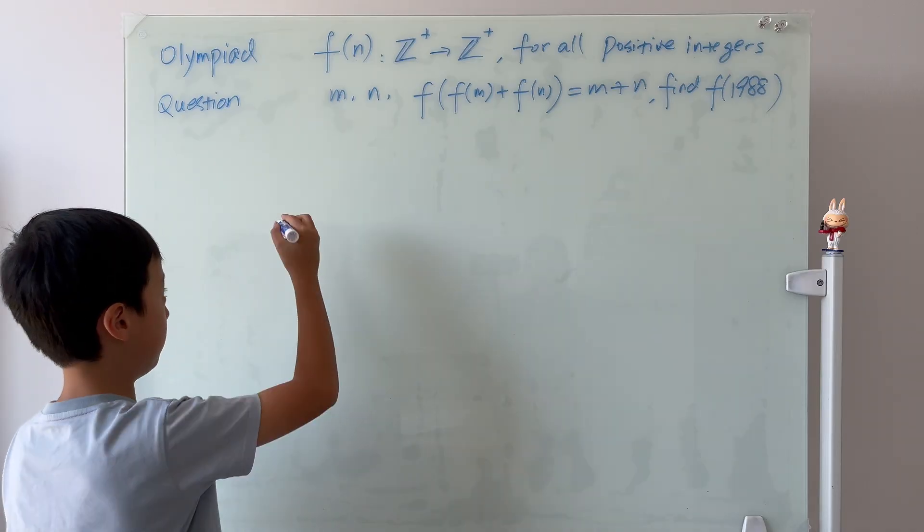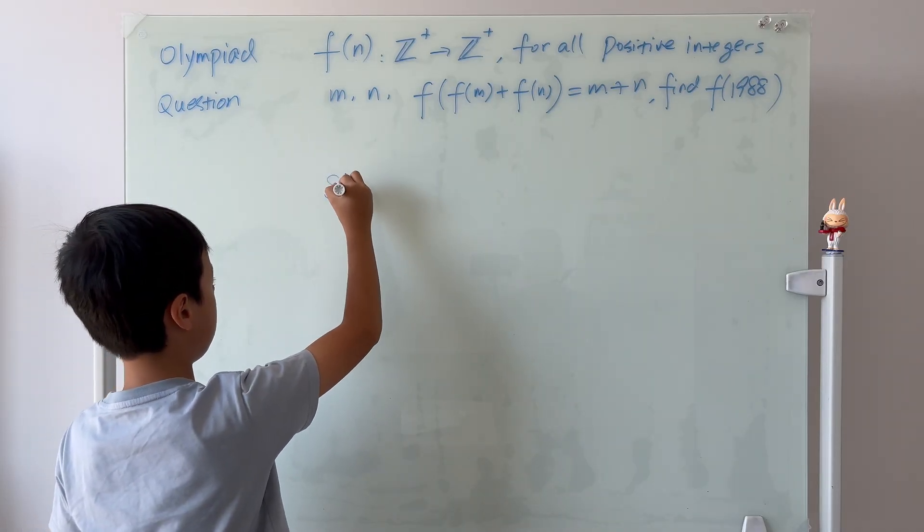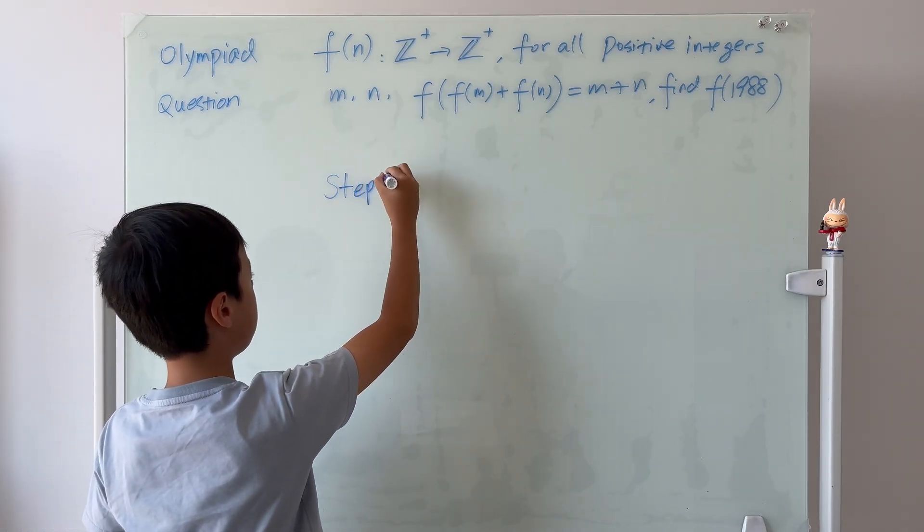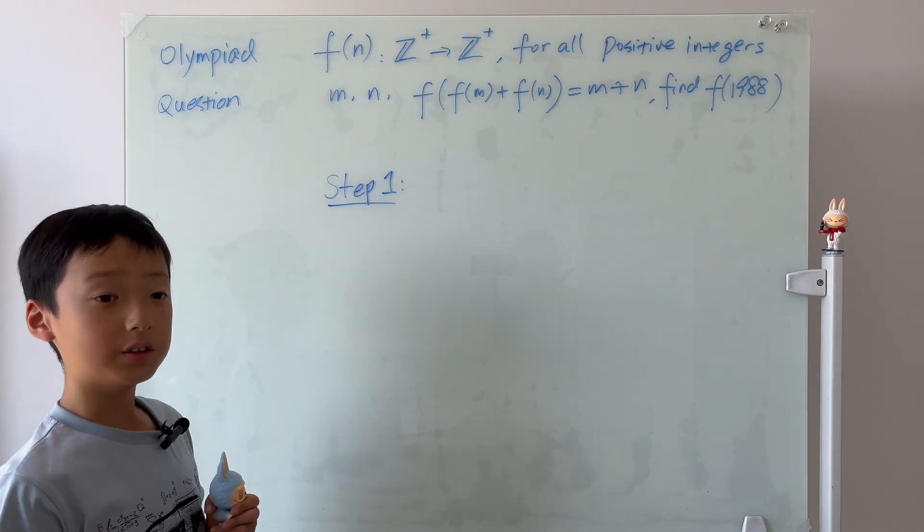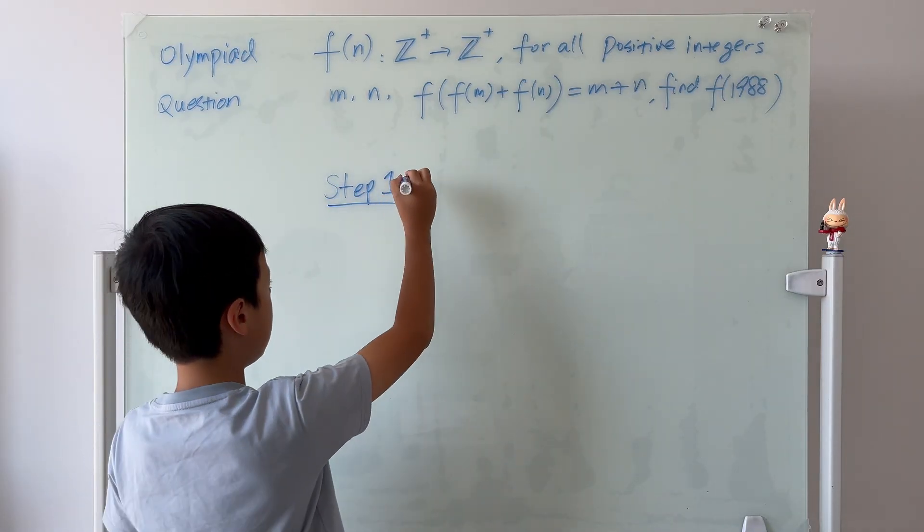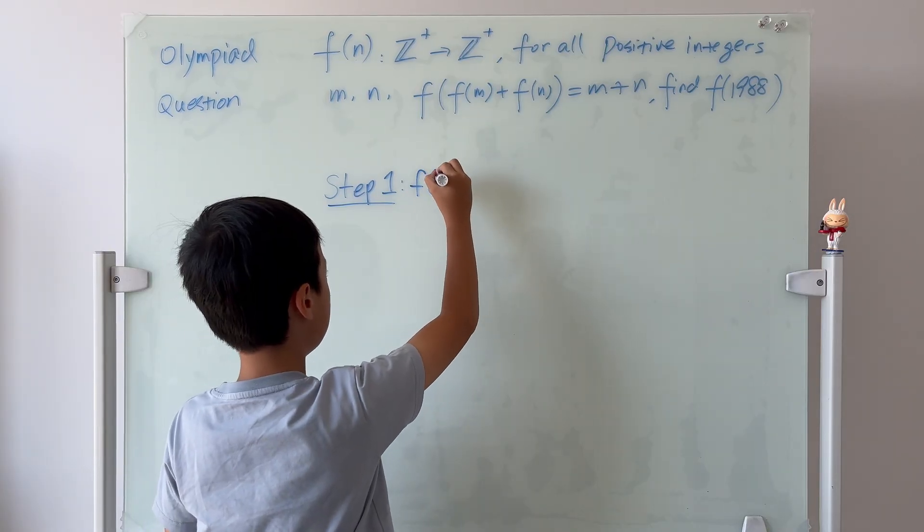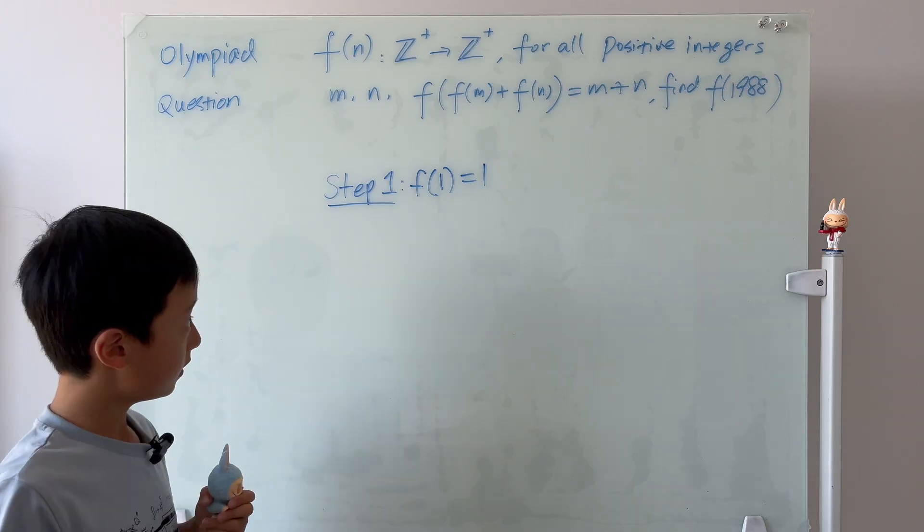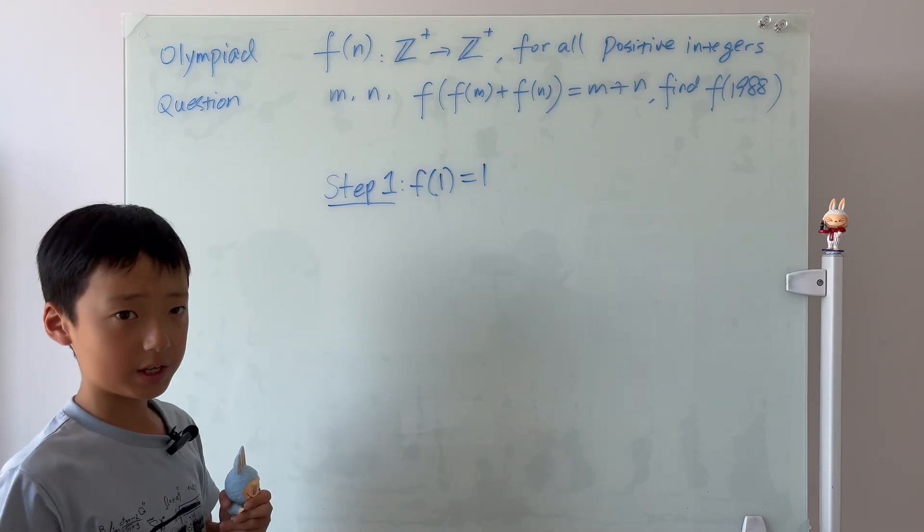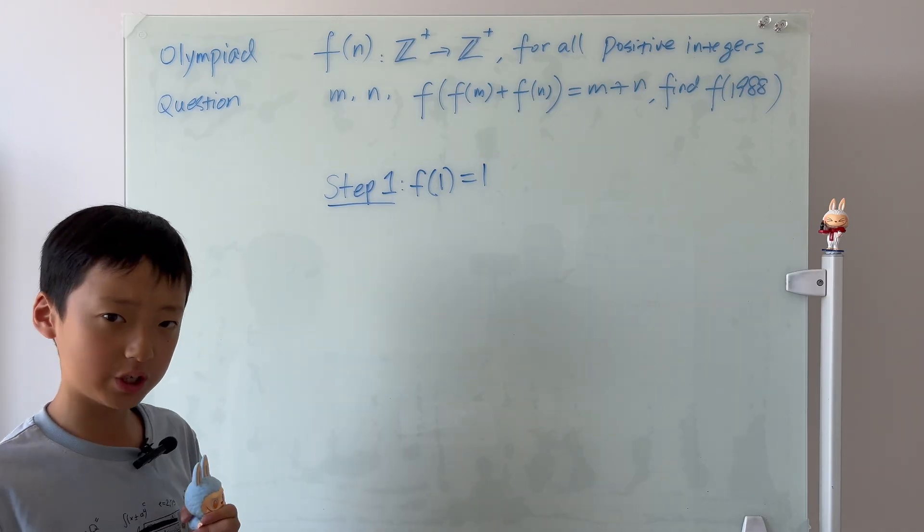So, we know that step one of mathematical induction is to prove the simplest case f of 1 is equal to 1, right? Well, how do we prove this? By contradiction.